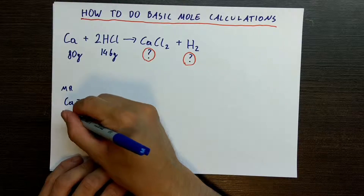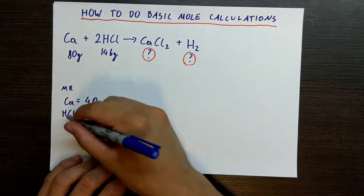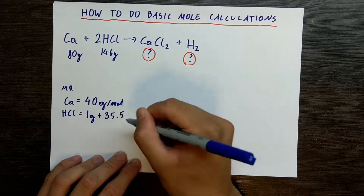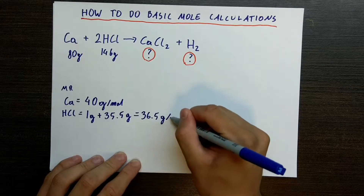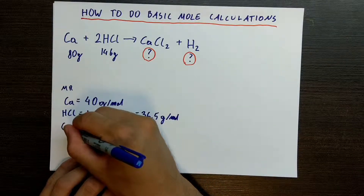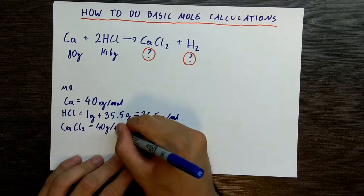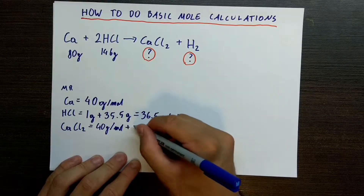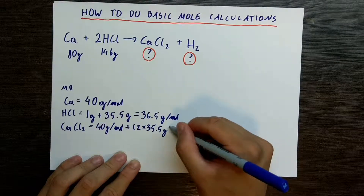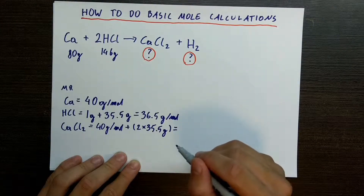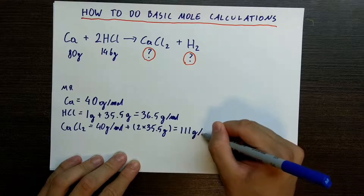What about hydrochloric acid? HCl. So one hydrochloric acid will have 1 gram from hydrogen plus 35.5 grams from chlorine, which gives us 36.5 grams per mole. What about calcium chloride? This one is quite big. We get 40 grams per mole from calcium plus 2 times 35.5 grams, because we have two chlorine atoms here, which gives us 111 grams per mole.